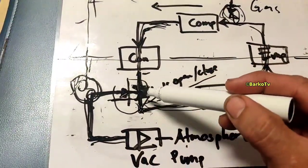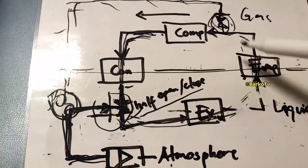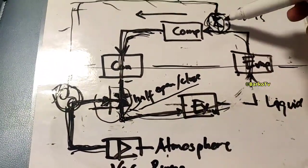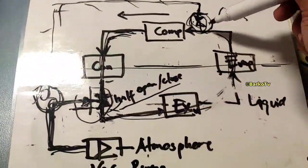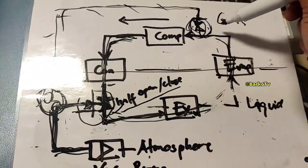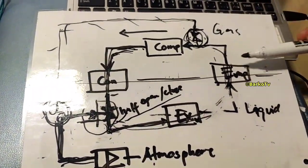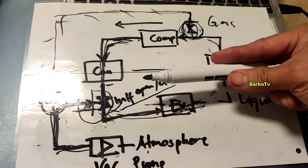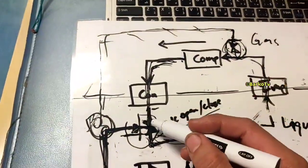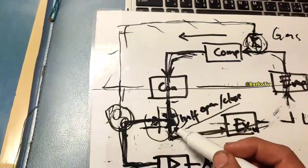Here is the diagram for our system: compressor, condenser, liquid valve, charging expansion valve, and evaporator — these are the four main components. On the gas side, we don't have any isolation valve for the suction or gas side of the compressor. At the top side is the liquid condenser, and this is the charging valve for the liquid side.